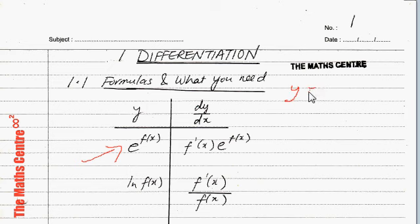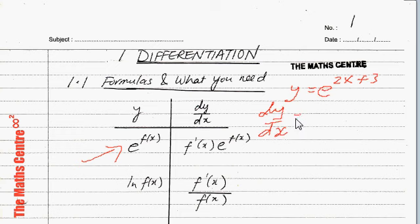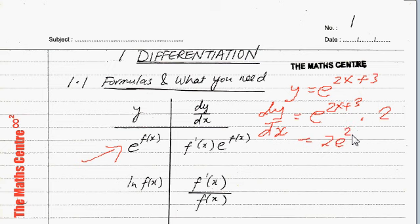So let's say we have y equals e to the power of 2x plus 3. When you differentiate an exponential function, you will get the exponential function. So we write e to the power of 2x plus 3, and don't forget to differentiate the exponent, which is 2, so you will get 2e to the power of 2x plus 3. So if y equals e to the power of f(x), then dy/dx equals f'(x) times e to the power of f(x), like we have done here.